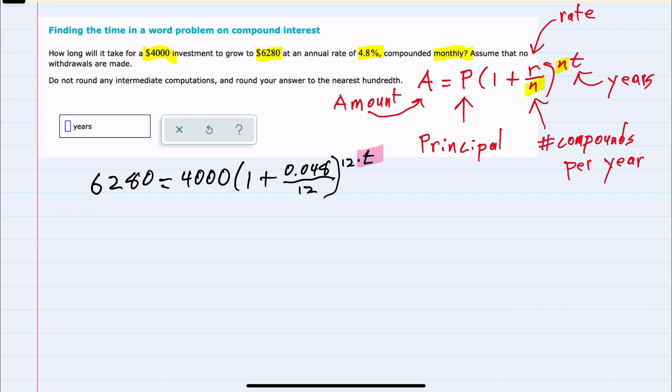So ultimately, we need to solve this equation for T, and I can start with just some simplification. On the right-hand side, inside the parentheses, we have 1 plus 0.048 divided by 12...